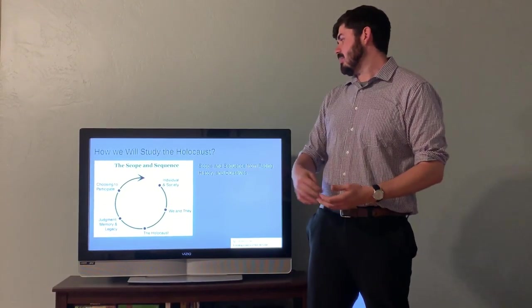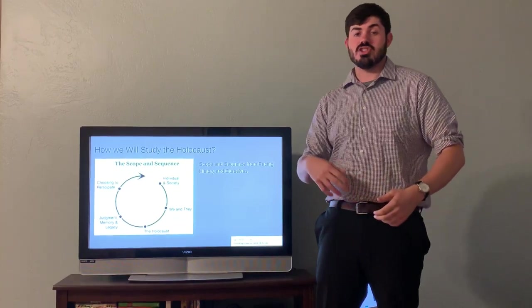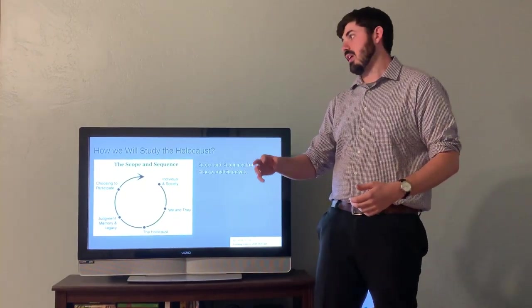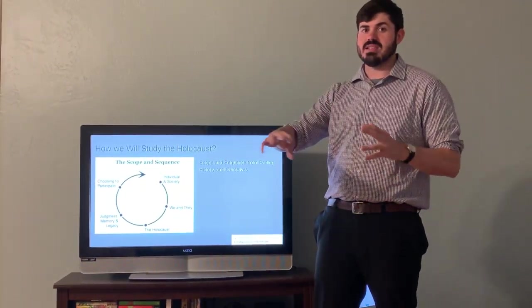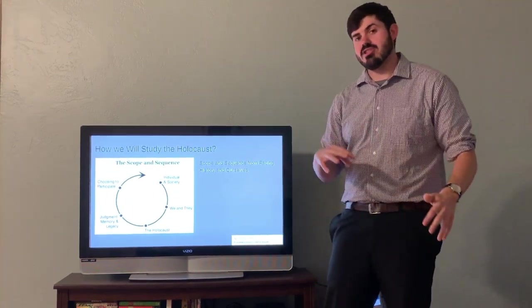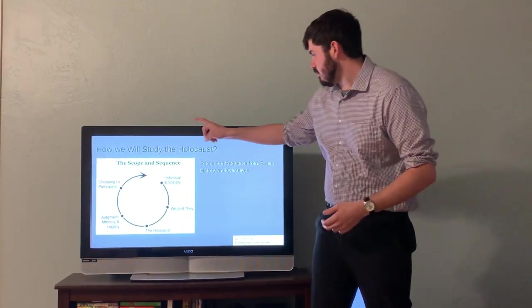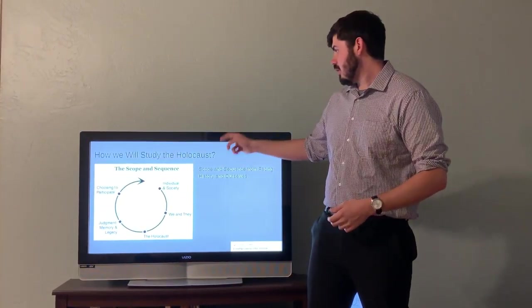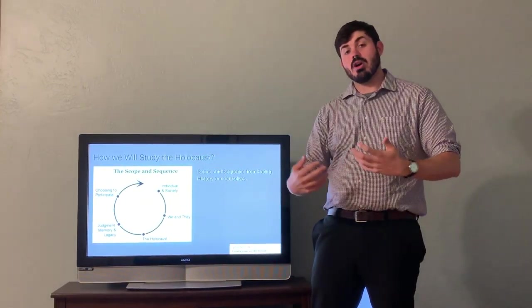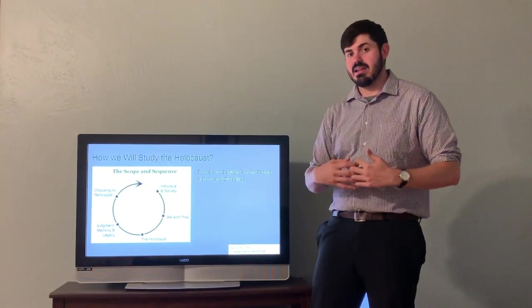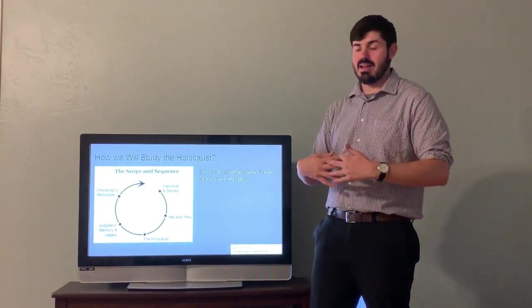So we're going to be studying the Holocaust through what's called the scope and sequence. And this is off of a website dedicated to the study of these kinds of historical tragedies. And so as you can see, it kind of moves in a circle. So we start with the individual and society. We need to think about ourselves and our place in society, which is kind of where we're going to start today.